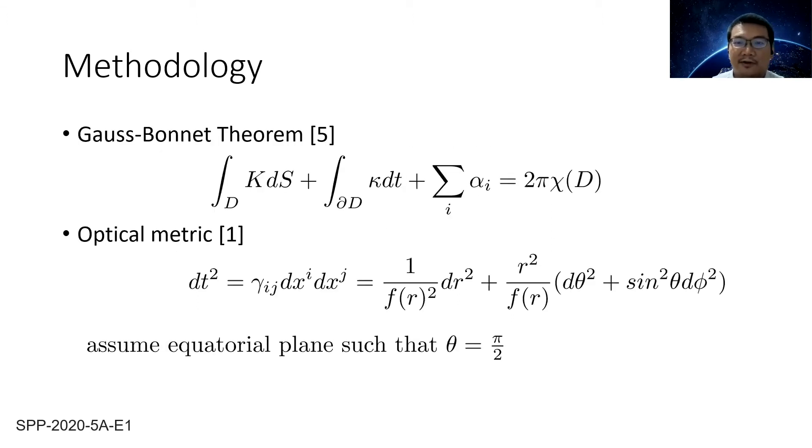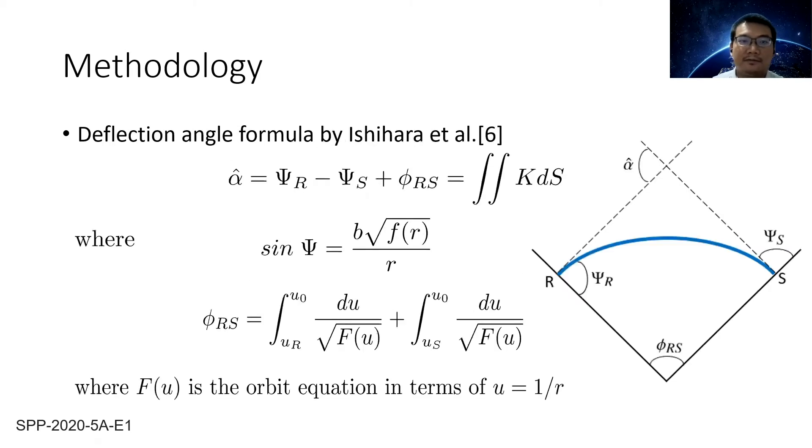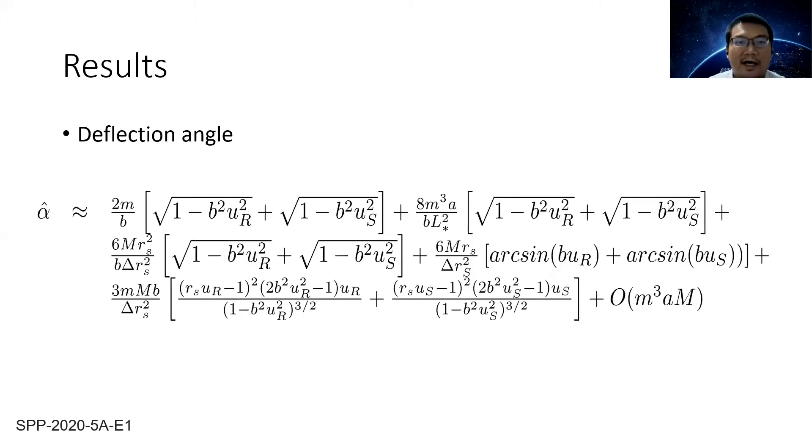We applied Gauss-Bonnet theorem to compute for the deflection angle. We converted the metric to the two-dimensional optical metric as required by the Gauss-Bonnet theorem, and we assume equatorial plane such that theta is π/2. Then we use the deflection angle formula by Ishihara et al. as follows, and computing for the deflection angle we got the following equation.